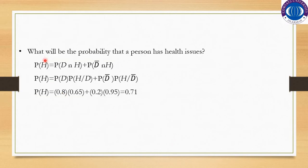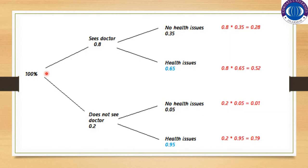Let H represent the event that the selected person has health issues, D represent that the person sees the doctor, and D' represent that the person does not see the doctor. As described, there would be two scenarios.